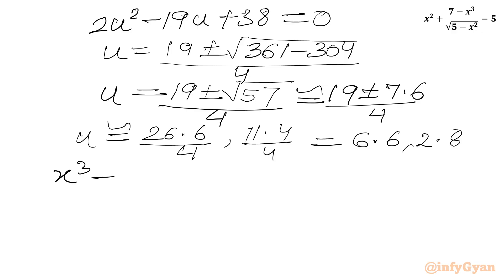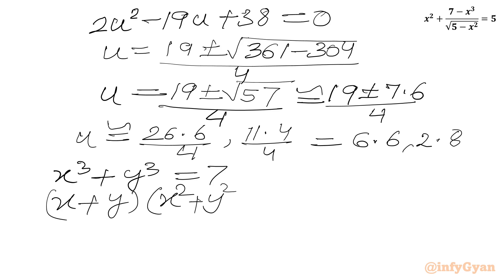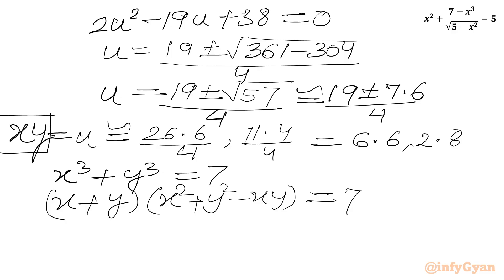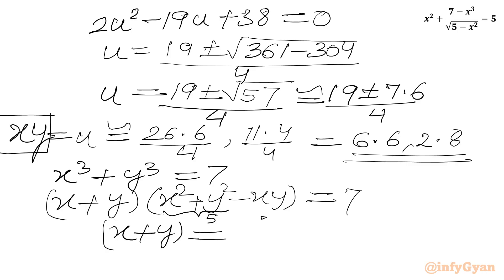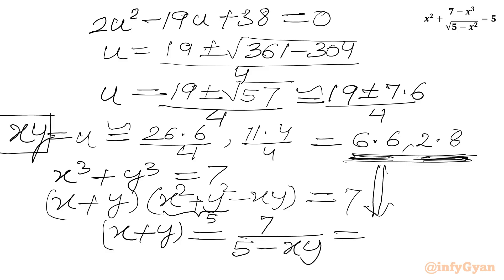Now using equation 2, x³ + y³ = 7, with the formula (x+y)(x² + y² − xy) = 7, and since x² + y² = 5, we get x + y = 7 / (5 − xy). For xy = 6.6: x + y = 7 / (5 − 6.6) ≈ −4.3. For xy = 2.8: x + y = 7 / (5 − 2.8) ≈ 3.17.